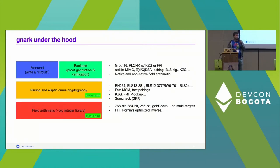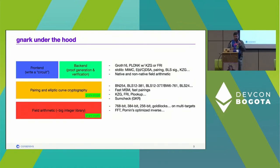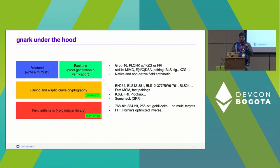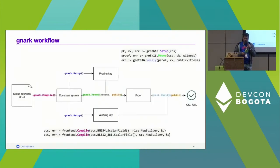In the back-end we have Groth16 and PLONK with two polynomial commitments: KZG and FRI. In the front-end we have a standard library with MiMC, ECDSA, EdDSA, BLS in-circuit, and APIs for both native and non-native field arithmetic. In gnark-crypto we have BN, BLS12, BLS24 curves, twisted Edwards, fast multi-scalar multiplication, fast pairings, KZG, Plookup, GKR, and finite field arithmetic ranging from 768-bit down to Goldilocks.